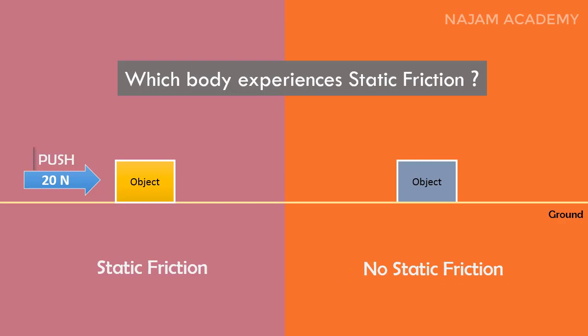Now, if I push this body with 20N force, then there is another horizontal static frictional force of 20N in the opposite direction.